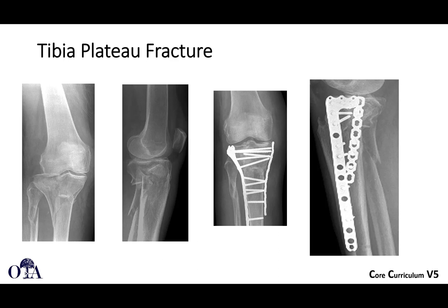Tibial plateau fractures can have a joint depression where the distal femur falls in and creates a pothole. There's also widening of the condyle and a lot of comminution. This is fixed with open reduction internal fixation using plates and screws, and many times this may need to be done both medially and laterally.